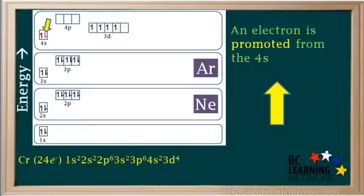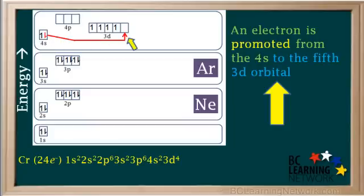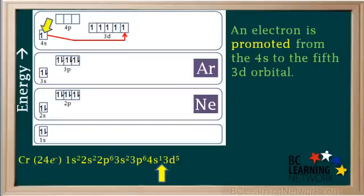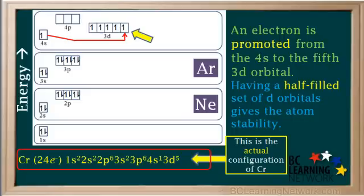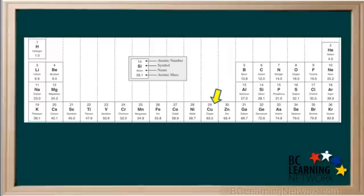However, something different happens with chromium. One of the 4s electrons is removed and promoted from the 4s up to the fifth 3d orbital and enters the orbital here. So instead of 4s2, it's now 4s1. And instead of 3d4, it's 3d5. It turns out the energy used to promote this electron is worth it. Having a half-filled set of 3d orbitals gives the atom a great amount of stability. So you need to remember that the actual configuration of chromium is 1s2, 2s2, 2p6, 3s2, 3p6, 4s1, 3d5.